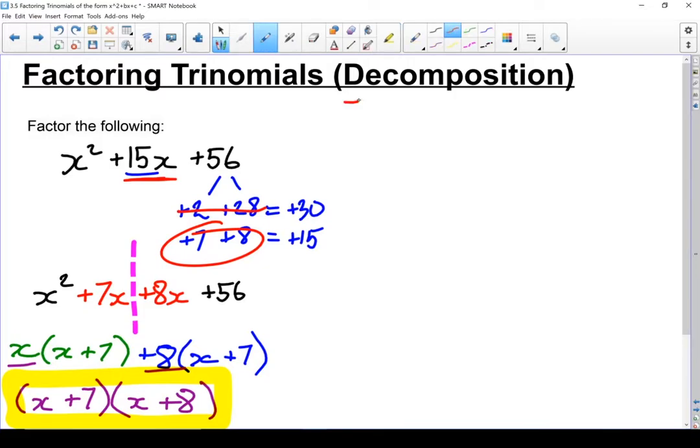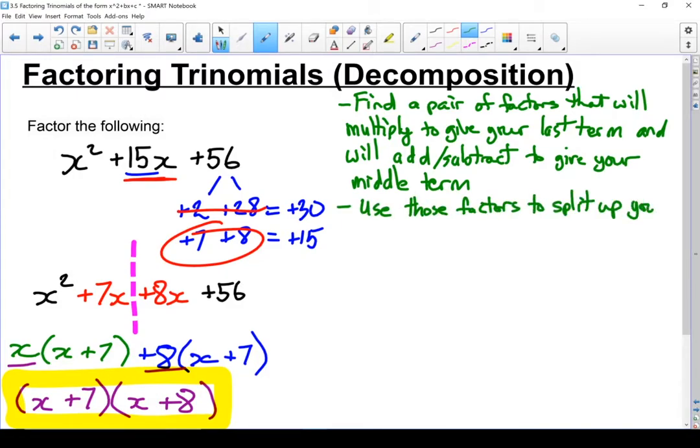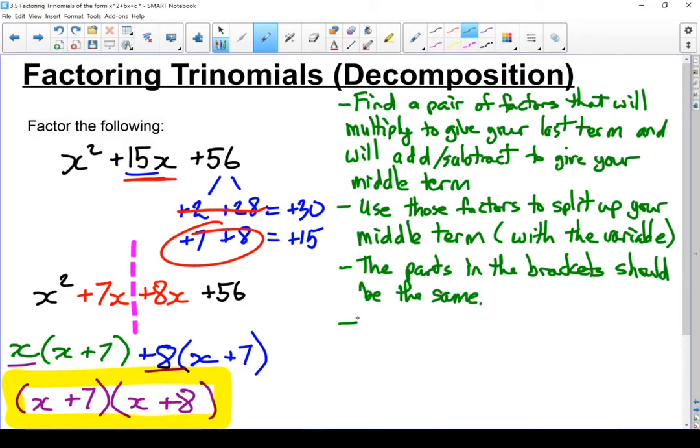Let's write down those steps. First step, find a pair of factors that will multiply together to give your last term, but add together to give the coefficient of your middle term. Split your middle term up using those factors and the variable that was on it. The parts in the brackets should be the same. The binomial in the brackets should be your first binomial, and the leftovers should be put together to make your last binomial.